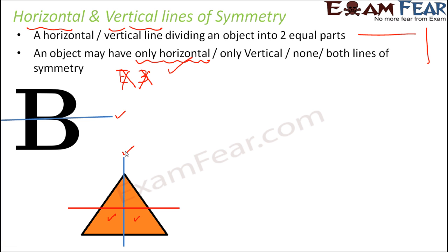Now what about horizontal line? So when you think of this horizontal line, you see one part is like this, the other part is like this. So do you think they are identical? No, they are not identical. So this triangle has only vertical line of symmetry.